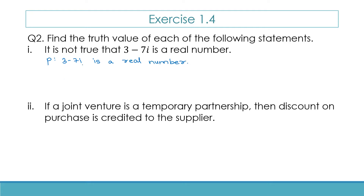So now, if this is the statement P, then symbolically it can be written as not P. We have to first figure out the truth value for P, and then we will be able to get the truth value for not P. Now, 3 minus 7i is not a real number — it is a complex number. So P is false. Therefore, not P is true.